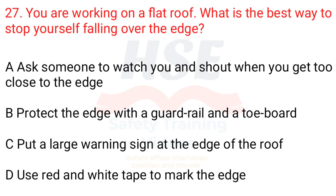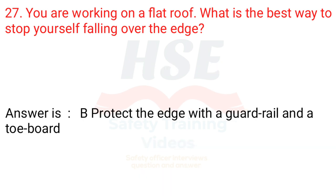Question 27: You are working on a flat roof. What is the best way to stop yourself falling over the edge? A. Ask someone to watch you and shout when you get too close to the edge. B. Protect the edge with a guard rail and a toe board. C. Put a large warning sign at the edge of the roof. D. Use red and white tape to mark the edge. Answer is B. Protect the edge with a guard rail and a toe board.